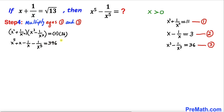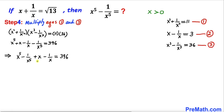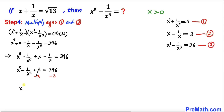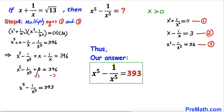Rearranging terms, we put x⁵ minus 1 over x⁵ together, and then x minus 1 over x separately. We know x minus 1 over x equals 3 from equation 2, so we replace it by 3. Subtracting 3 from both sides, the x - 1/x term is gone, and our x⁵ minus 1 over x⁵ simply turns out to be 396 minus 3, which is 393. That's our answer: x⁵ minus 1 divided by x⁵ equals 393. Thanks for watching, and please don't forget to subscribe to my channel for more exciting videos.